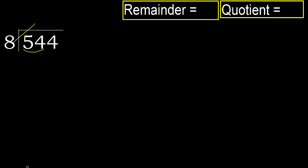8 — multiply by which number is nearest to 54 but not greater. 8 multiplied by 7 is 56, which is greater. 8 multiplied by 6 is 48, which is not greater. Subtract: 54 minus 48 equals 6.